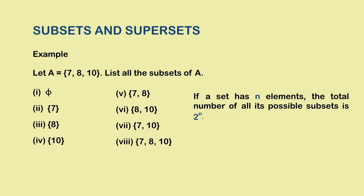Here, set A has 3 elements and so the number of subsets of A is equal to 2 to the power 3, which is equal to 8.